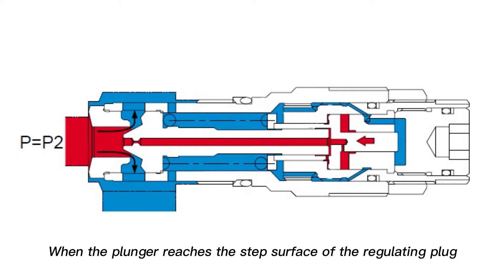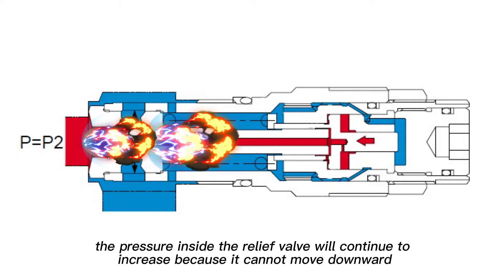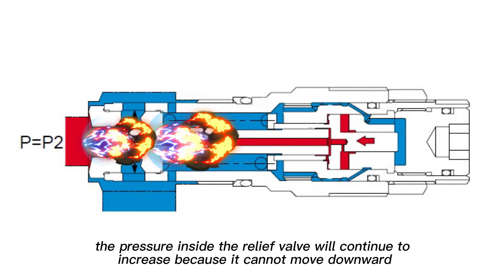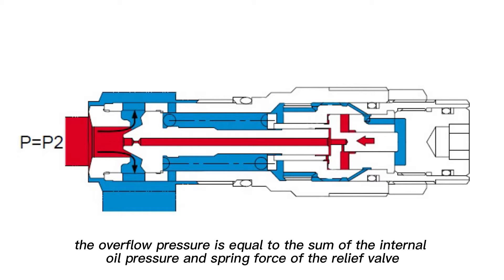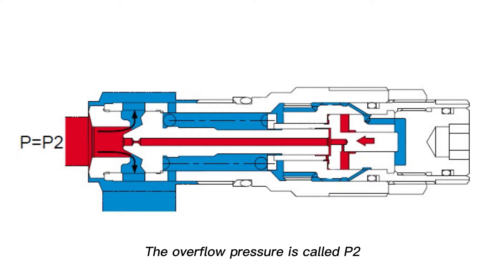When the plunger reaches the step surface of the regulating plug, the pressure inside the relief valve will continue to increase because it cannot move downward. At this time the overflow pressure is equal to the sum of the internal oil pressure and the spring force of the relief valve. This overflow pressure is called P2.